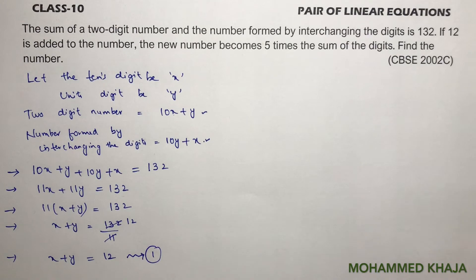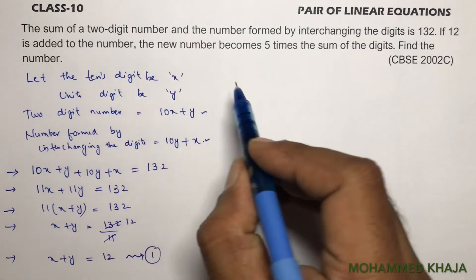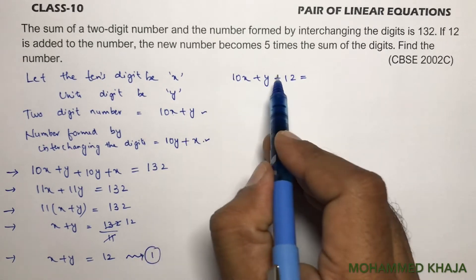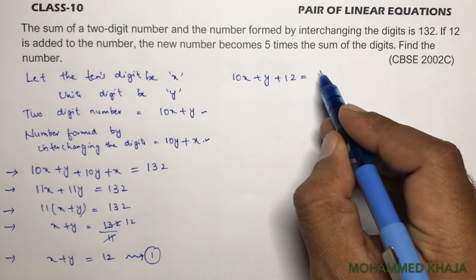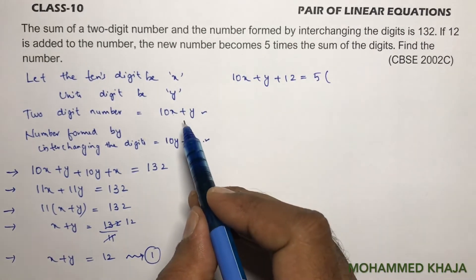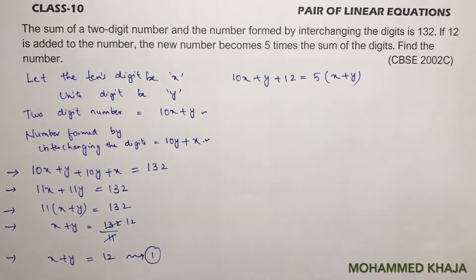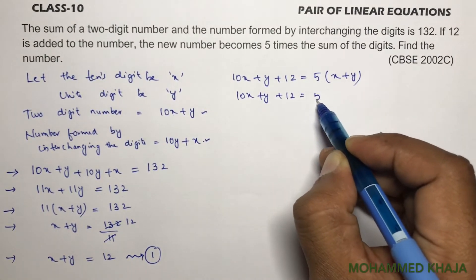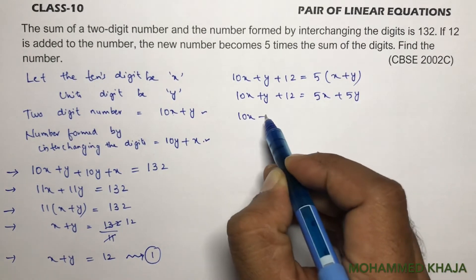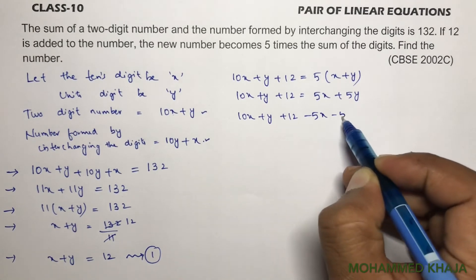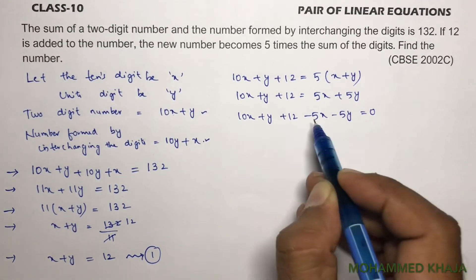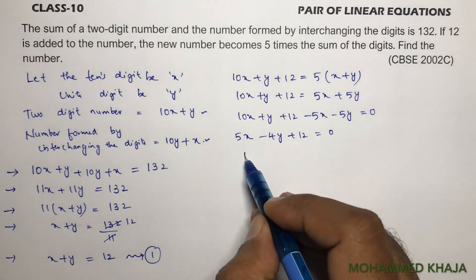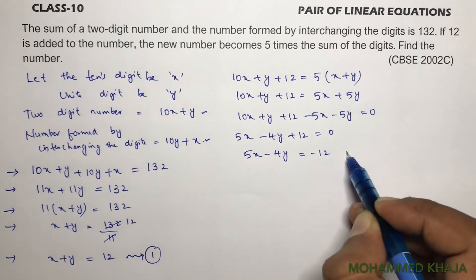If 12 is added to the number (10x + y), the new number becomes 5 times the sum of the digits. The digits are x and y — not 10x and y. So: 10x + y + 12 = 5(x + y) = 5x + 5y. Rearranging: 10x + y + 12 − 5x − 5y = 0, which gives 5x − 4y = −12. This is equation 2.